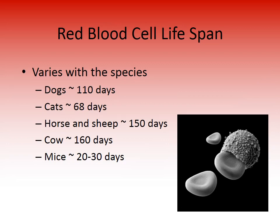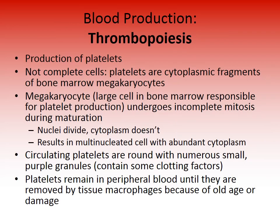Red blood cell lifespan varies by species: 110 days in dogs, about 68 days in cats, 150 days in horses and sheep, 160 days in cows, and only 20 to 30 days in mice. When red blood cells expire, macrophages — phagocytic cells — are responsible for getting rid of them, as illustrated by a picture of a macrophage engulfing an old, dying red blood cell.